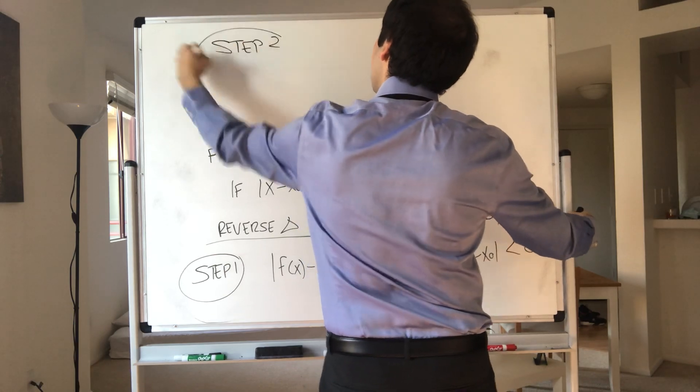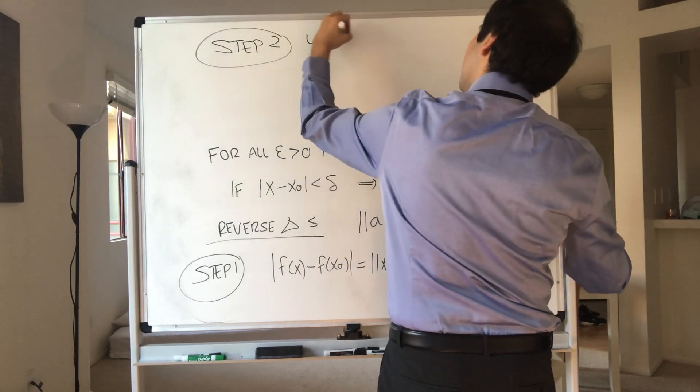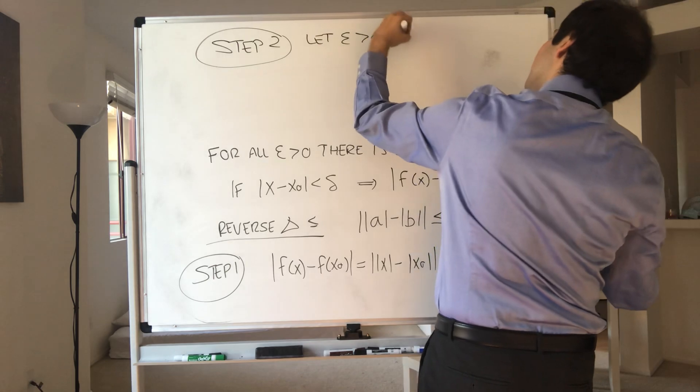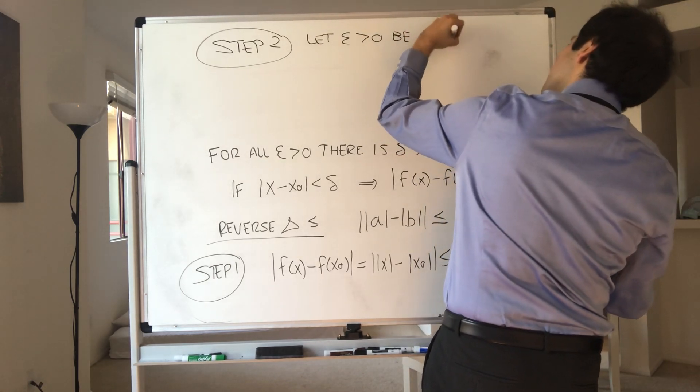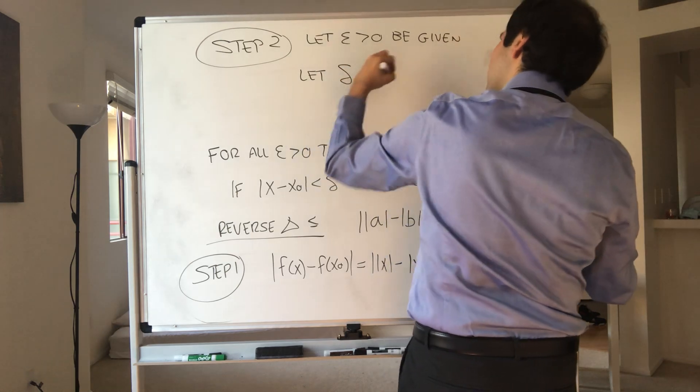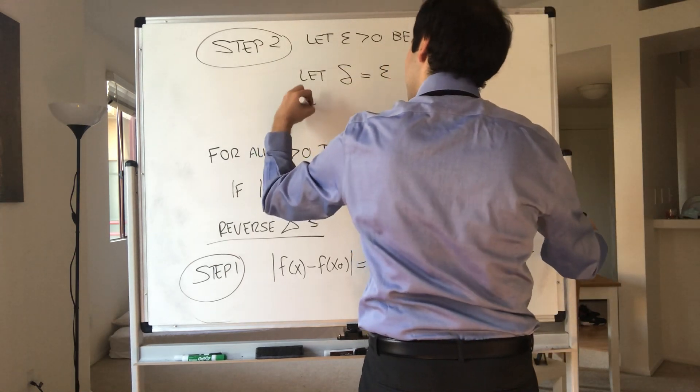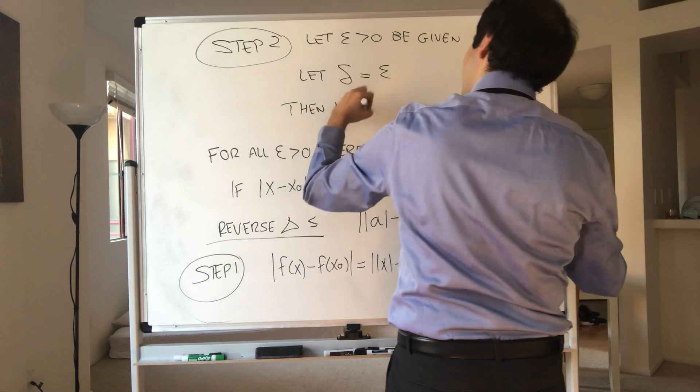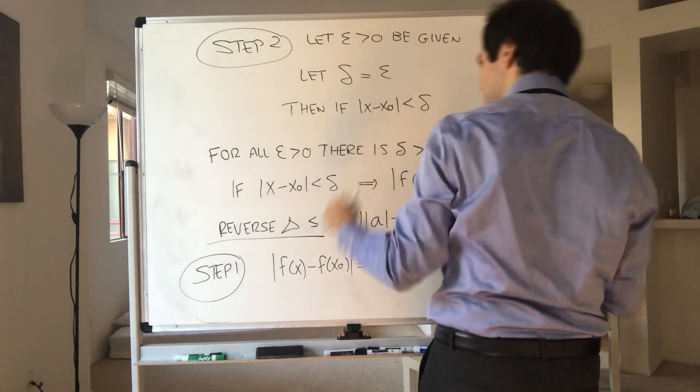Step two. So let epsilon be given, and let delta to be epsilon. Then, if |x - x₀| is less than delta,